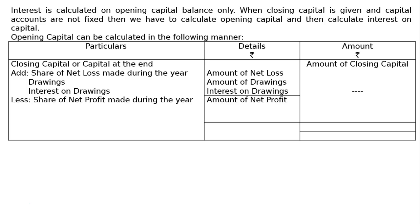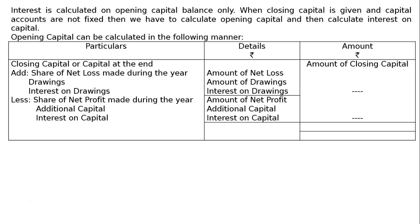Then, less the share of net profit made during the year — the amount of net profit. The second one will be additional capital, that is capital added during the year or fresh capital introduced. And the last one will be interest on capital. These three amounts will be written in the details column, totalled, and shown in the amount column. Now we add the first item and deduct the second item to find out the opening capital or capital at the beginning.